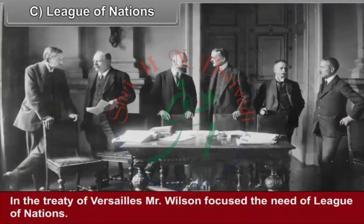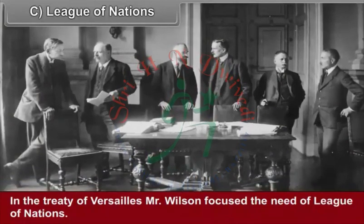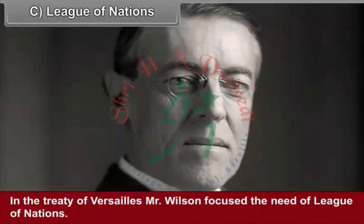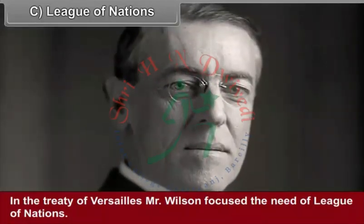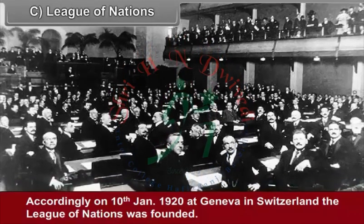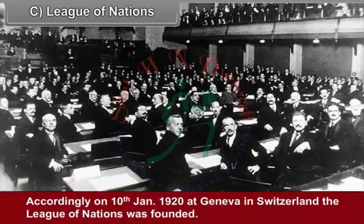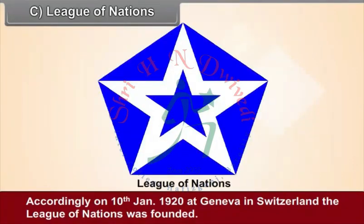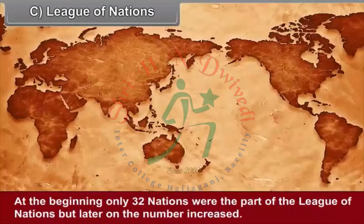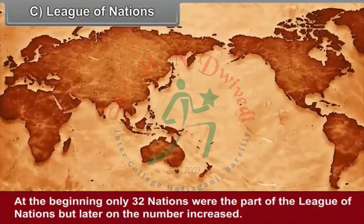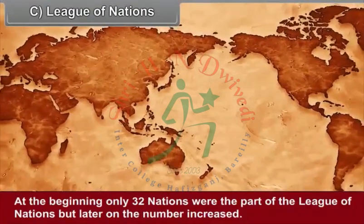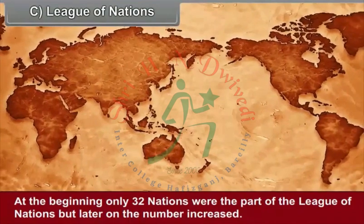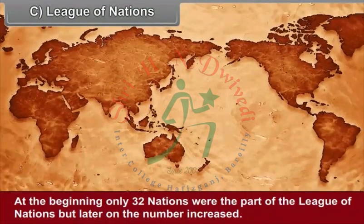In the Treaty of Versailles, Wilson focused on the need for the League of Nations. Accordingly, on 10th January 1920, at Geneva in Switzerland, the League of Nations was founded. At the beginning, only 32 nations were a part of the League of Nations, but later on the number increased.